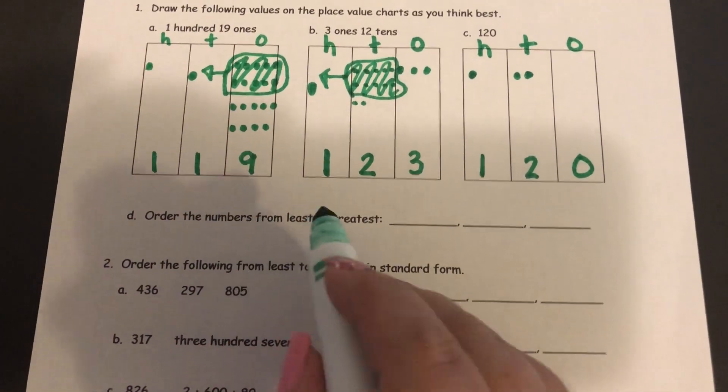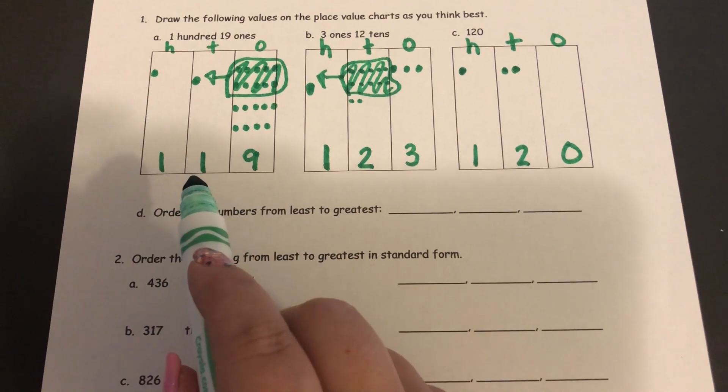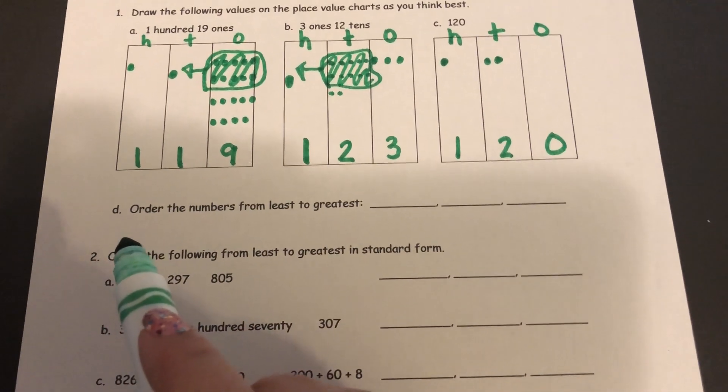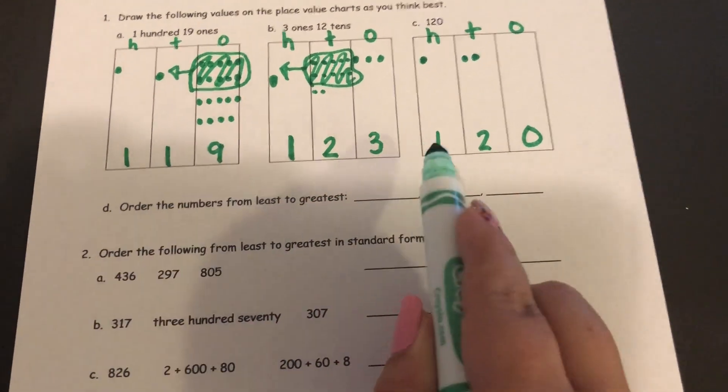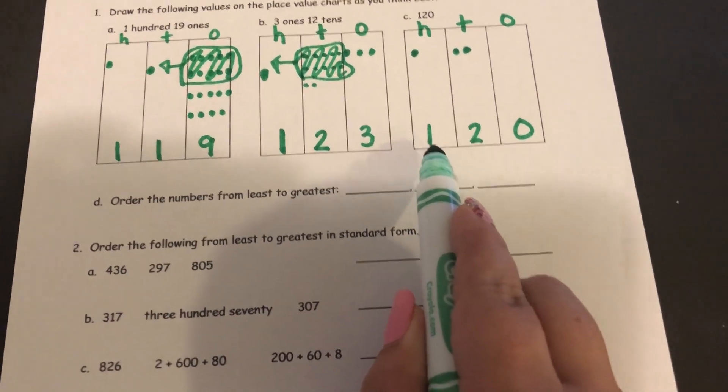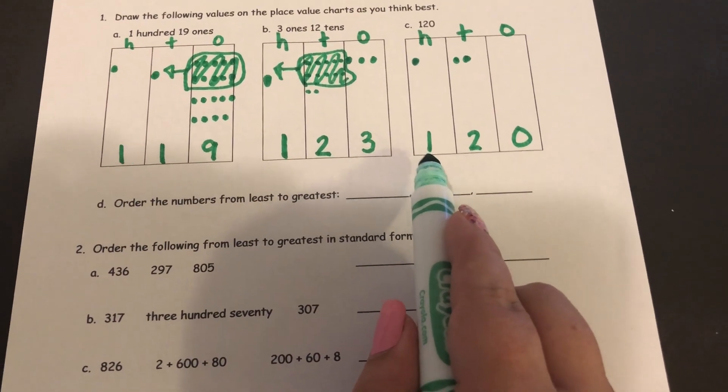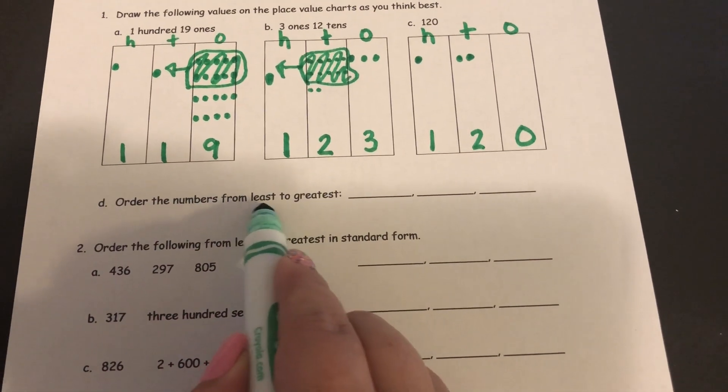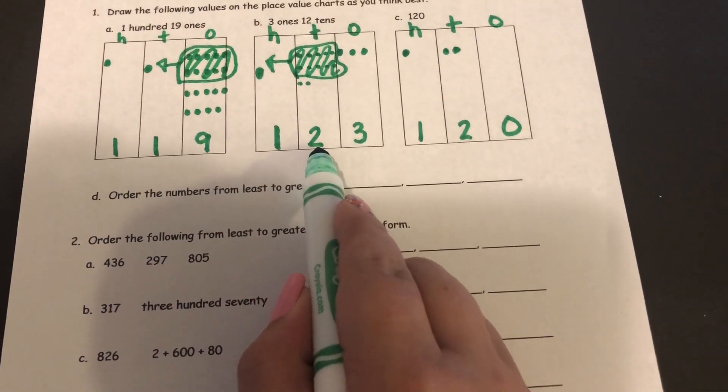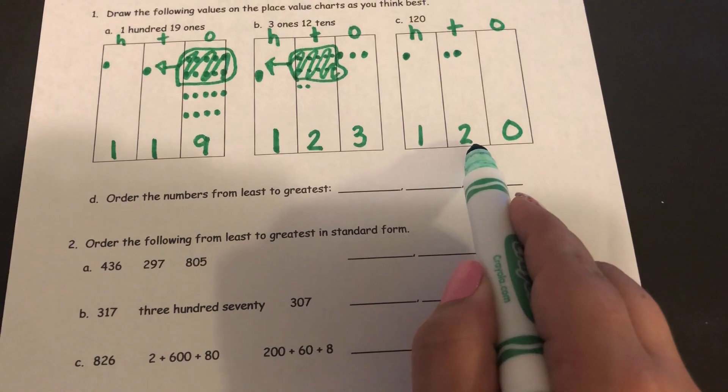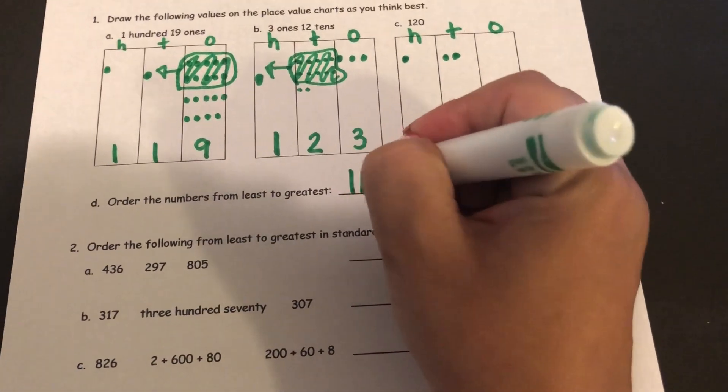Now it says to order the numbers from least to greatest. Alright, so the first thing I'm going to do is compare the hundreds place. 100, 100, and 100. Since they're all the same value, I'll need to move to my next place value, which is the tens. Remember, I'm looking for the least. This has 1 in the tens, 2 in the tens. Well, I know 1 is less than 2, so my least value would be 119.